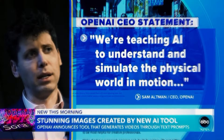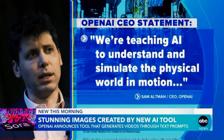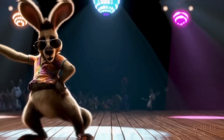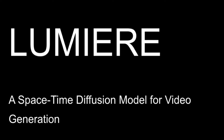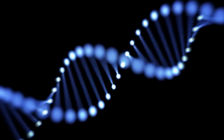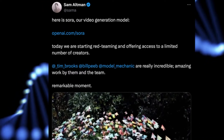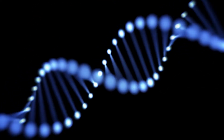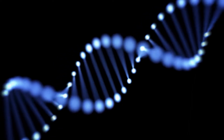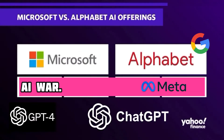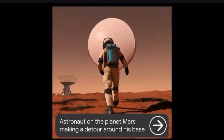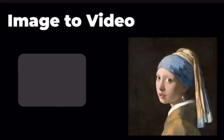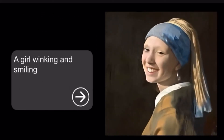CEO Sam Altman stating, we're teaching AI to understand and simulate the physical world in motion. Unlike Google's Lumiere, which was released a month ago, Sora has the capability to produce videos up to one minute in length. This development underscores the intensifying competition among tech giants like OpenAI, Google and Microsoft in the burgeoning field of text-to-video generation, projected to become a $1.3 trillion industry by 2032.